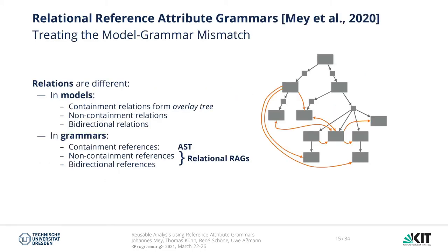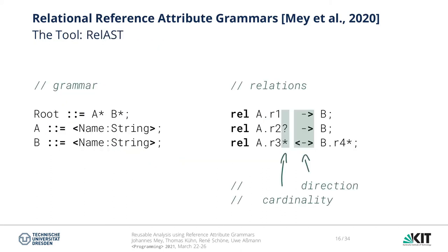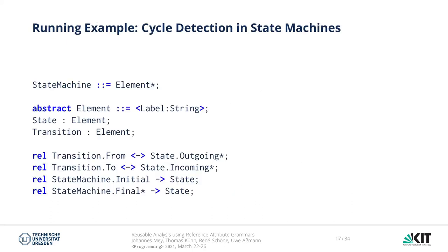Additionally, we use another extension: relational reference attribute grammars. These were originally conceived to handle the difference between models and grammars by adding intrinsic non-containment relations to the AST, which can also be bidirectional. In our implementation, we use an extension of the JastAdd system called RELAST, which adds relations to the grammar specification. In the left part, you can see a very simple grammar with three production rules using lists of children and type terminals. On the right, you can see definitions of relations — directed and bidirectional relations with different cardinalities.